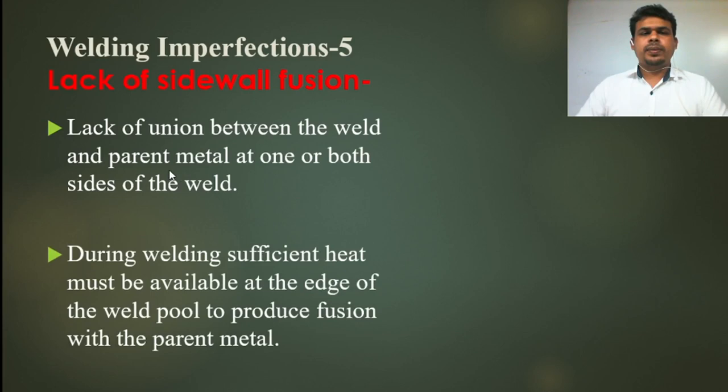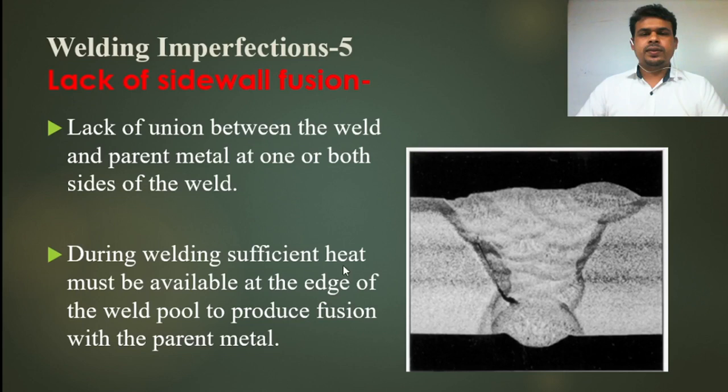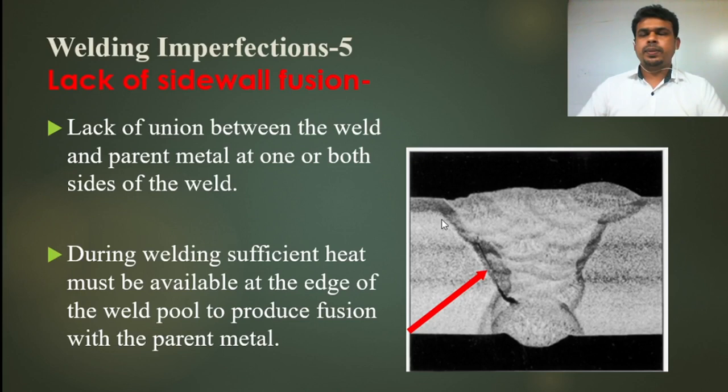Lack of fusion is the lack of union between the weld and parent metal on one or both sides of the weld bead. During welding, sufficient heat must be available at the edge of the weld pool to produce fusion with the parent metal. As you can see in the picture, in sidewall fusion the parent metal and weld metal are not fused properly at the sidewall — this is called lack of sidewall fusion.